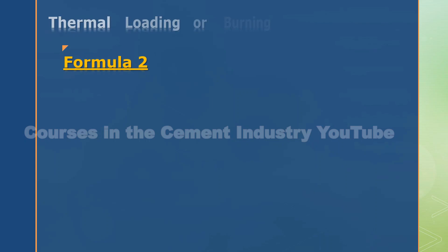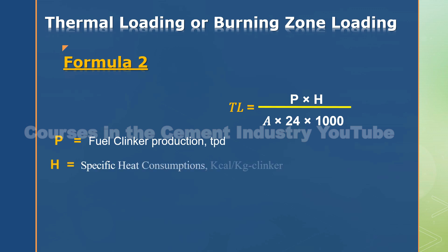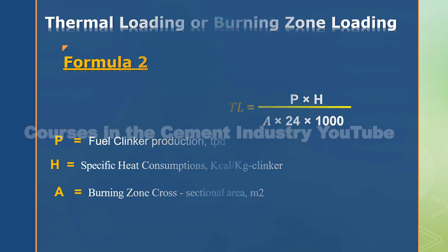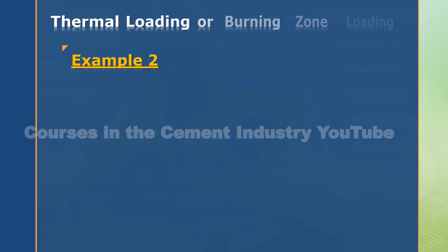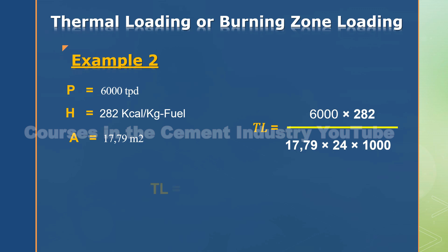Formula 2 for thermal loading or burning zone loading: TL equals — where P equals clinker production, H equals specific heat consumption, A equals burning zone cross-sectional area. Example 2: where P equals 6000, H equals 282, A equals 17.79. TL equals 3.97. Target equals 4 to 5.